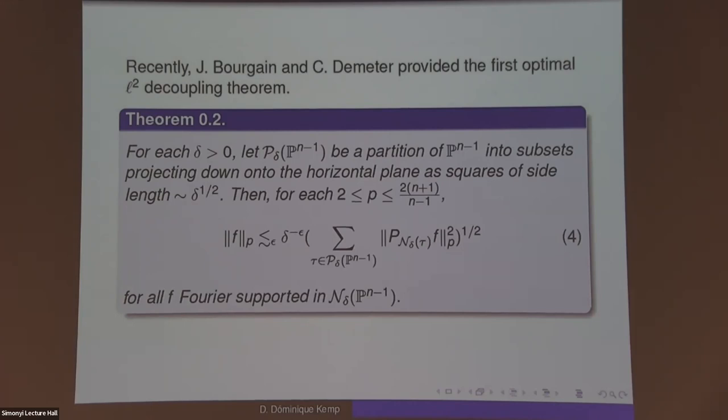Recently, about seven or eight years ago, Jean Bourgain and Ciprian Demeter provided the first optimal L² decoupling theorem. Let me first interpose that Wolff was the one to formally introduce decoupling for curves around 2001, and he produced LP decoupling results in the range P larger than 7/4 for the curve.